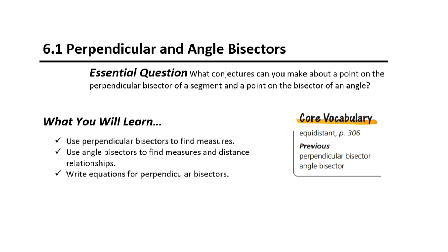6.1 Perpendicular and Angle Bisectors. The essential question we're looking at today is: what conjectures can you make about a point on the perpendicular bisector of a segment and a point on the bisector of an angle? You're going to learn to use perpendicular bisectors to find measures, use angle bisectors to find measures and distance relationships, and also write equations for perpendicular bisectors. Key vocabulary is equidistant, perpendicular bisector, and angle bisector.